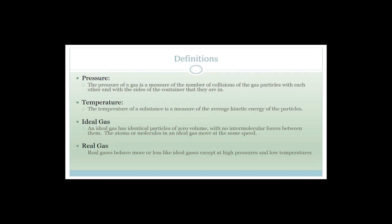Before we carry on learning about ideal gas laws, we need to learn some definitions. First: pressure. Pressure is a measure of the number of collisions of the gas particles with each other and with the walls of the container they're in. Second: temperature — very important. Temperature is a measure of the average kinetic energy of the particles.